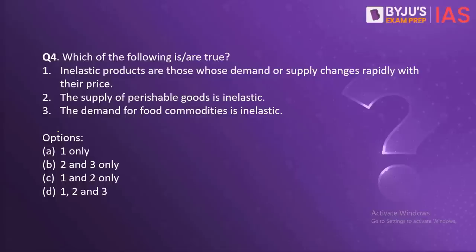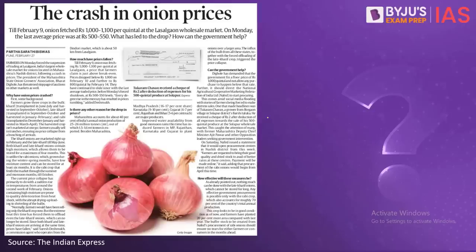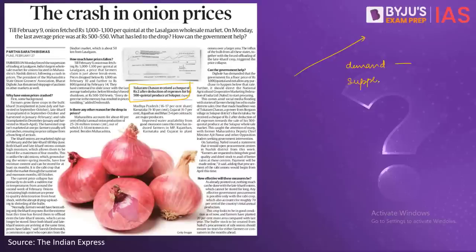The next question: which of the following is true? Inelastic products are those whose demand or supply changes rapidly with their price. The supply of perishable goods is inelastic. The demand for food commodities is inelastic. Recently, there was an uproar on social media because of a check received by a farmer for only two rupees when he sold 500 quintals of produce, raising a question regarding the inelasticity of agricultural produce. Inelasticity of demand or supply is when demand or supply does not change with the change in prices — even if prices increase, demand and supply stay the same.